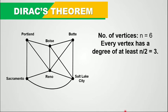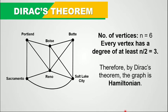By Dirac's Theorem, we can tell that the graph is Hamiltonian because we have met the conditions of Dirac's Theorem. A Hamiltonian graph is a graph that contains a Hamiltonian circuit, so let's try to find one.